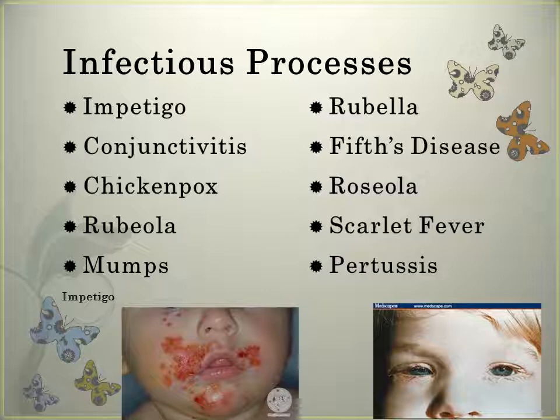With rubella, or German measles, this is obtained through nasopharyngeal secretions. The virus is also present in blood, stool, and urine. The incubation period is 14-21 days, and the child is infectious 7 days before to 5 days after the rash. They may have a low-grade fever, headache, malaise, anorexia, mild conjunctivitis, a sore throat, and lymphadenopathy. The rash is first on the face and then moves downward, disappearing in that same order. Treat it symptomatically, and these children need to avoid contact with pregnant women.